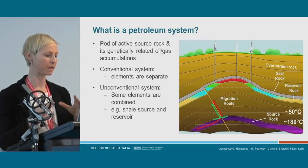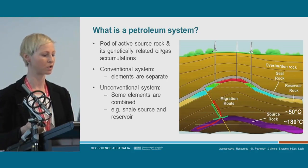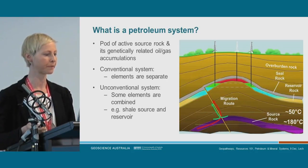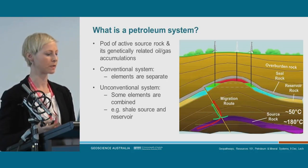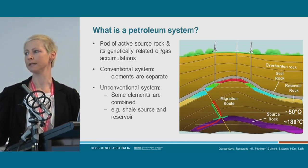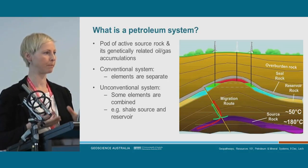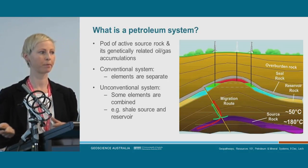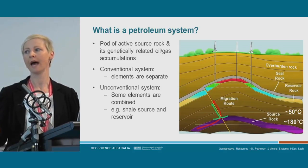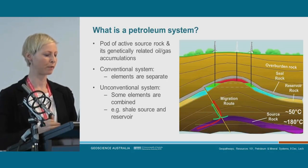With unconventional systems, some of the elements are combined. The source rock might have been buried to the right temperature to start producing oil, but it hasn't reached the point where migration occurs. So the source rock is also the reservoir.